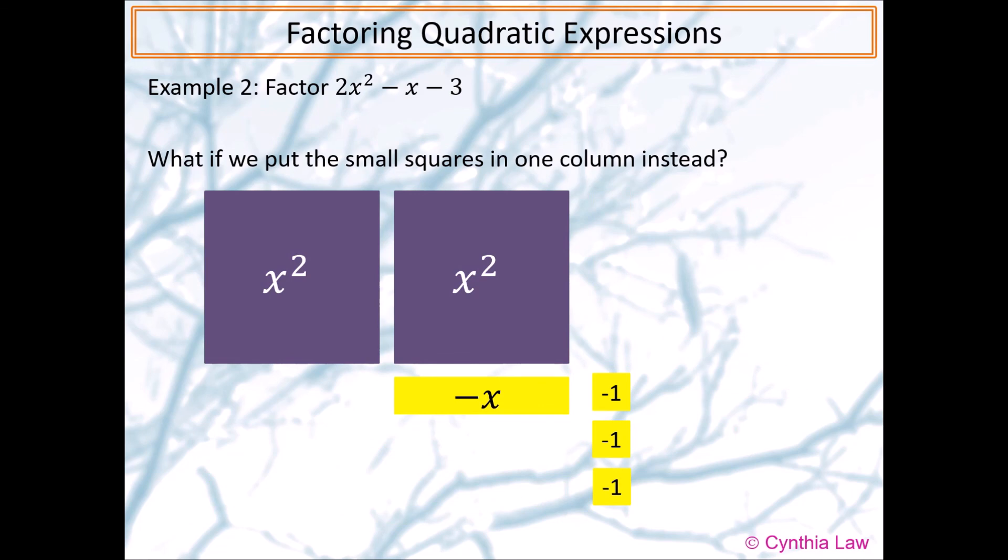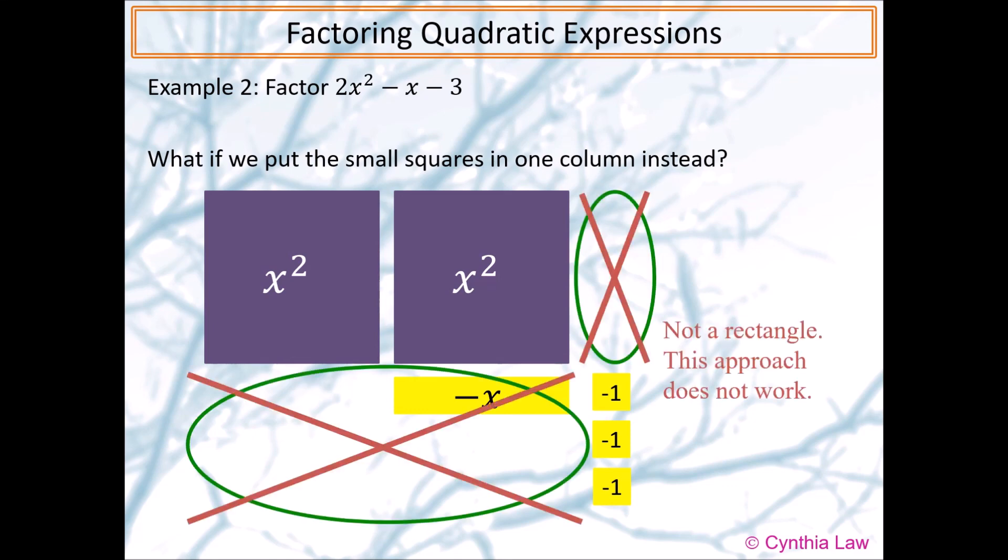If we keep the three small squares in a column, we can also put the yellow rectangular strip in one of the rows. However, now we have two different empty slots to fill in. Things are getting worse with this approach. We found out that there are at least three ways to do it wrong, but only one way to do it correctly.